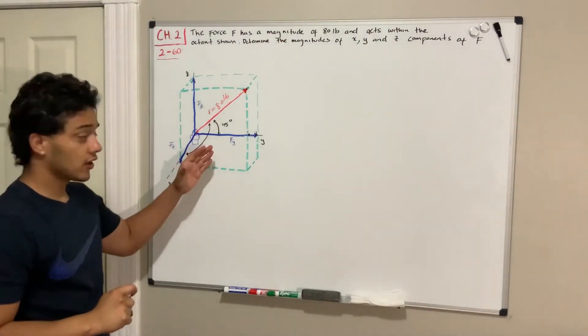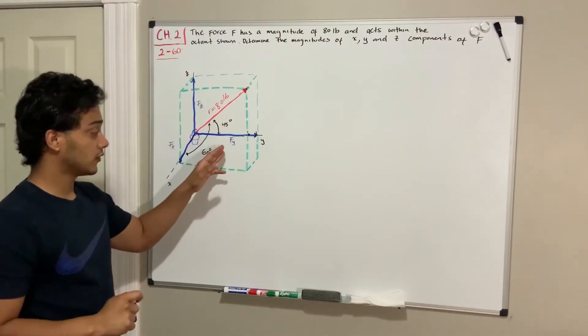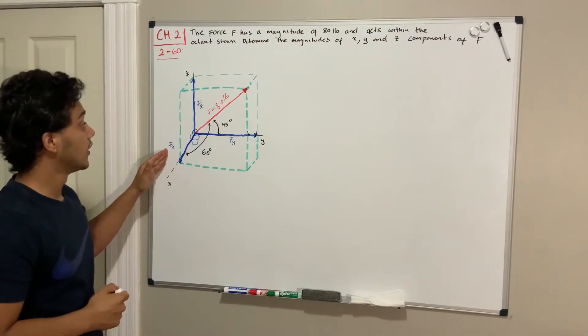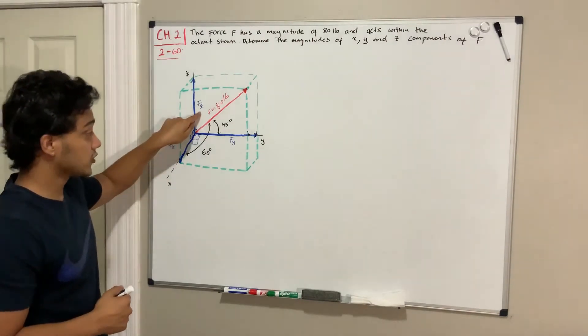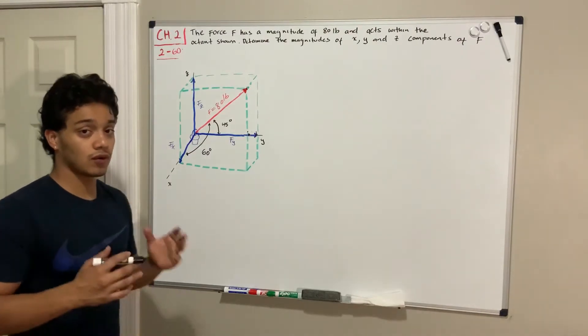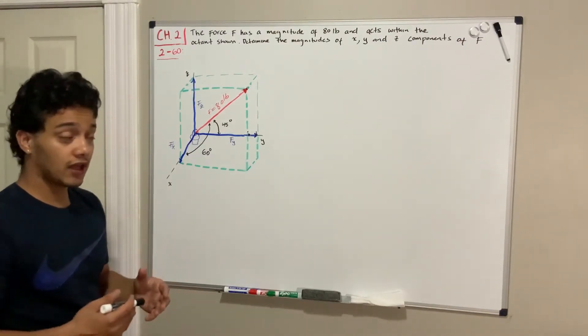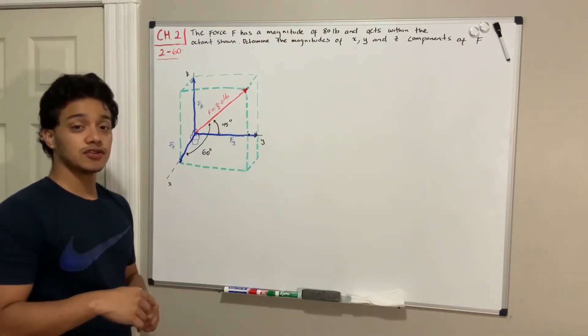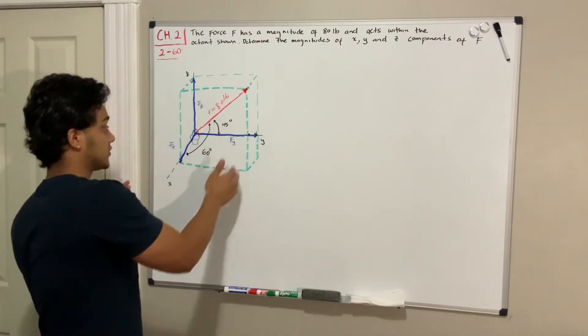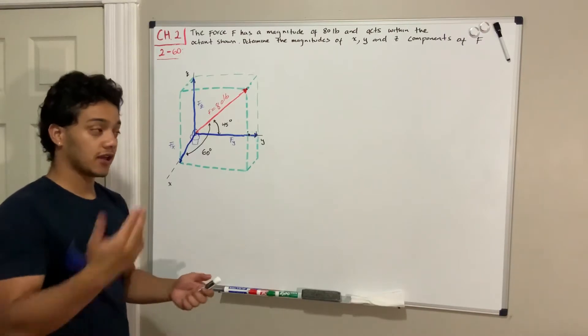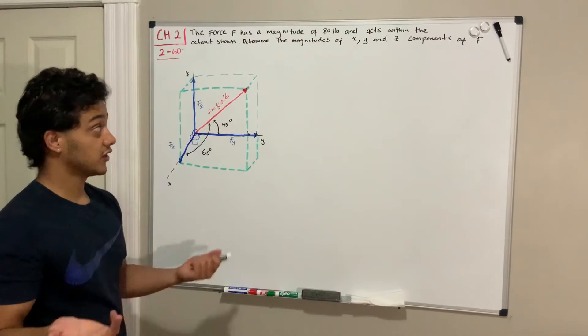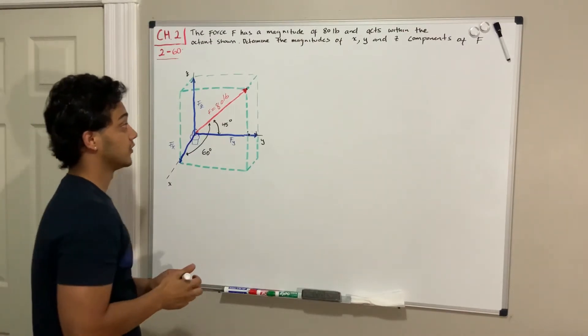With this angle we can find the magnitude of the force in the y-direction and also the force in the x-direction. To the z-direction they haven't given us any angle, so what we're going to do is use the Pythagorean theorem of these three forces and solve for Z, because we already know that the hypotenuse in total is going to be 80 pounds.